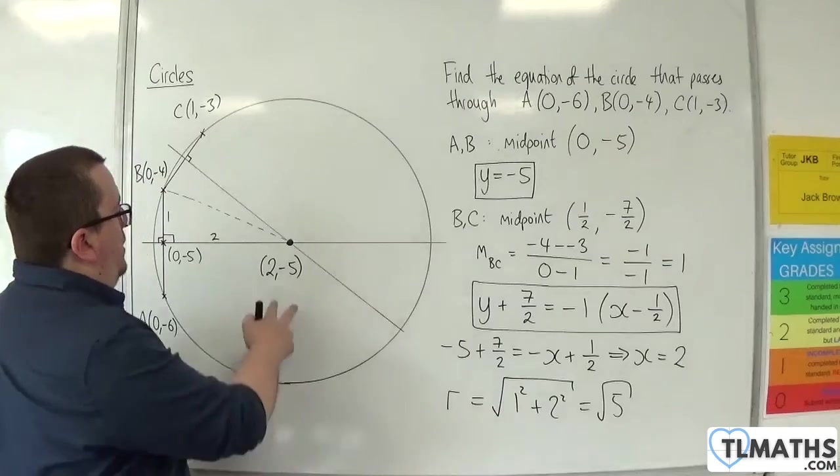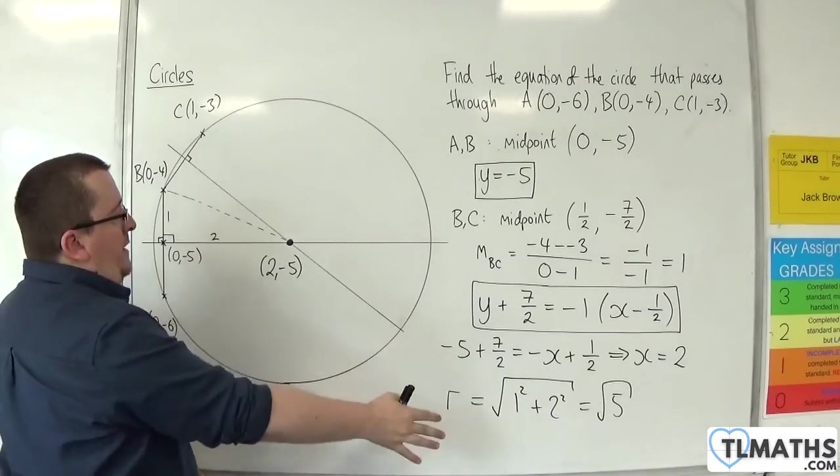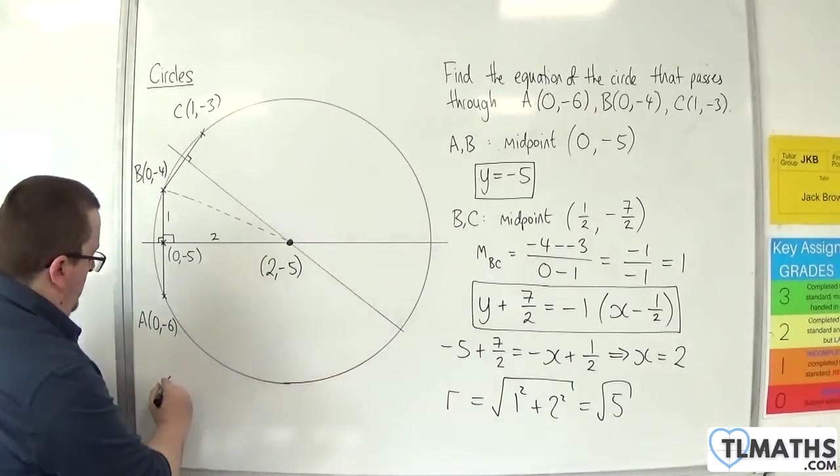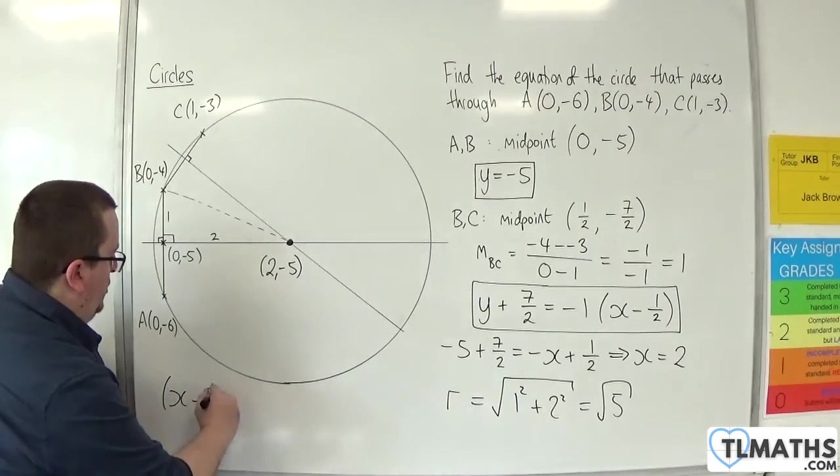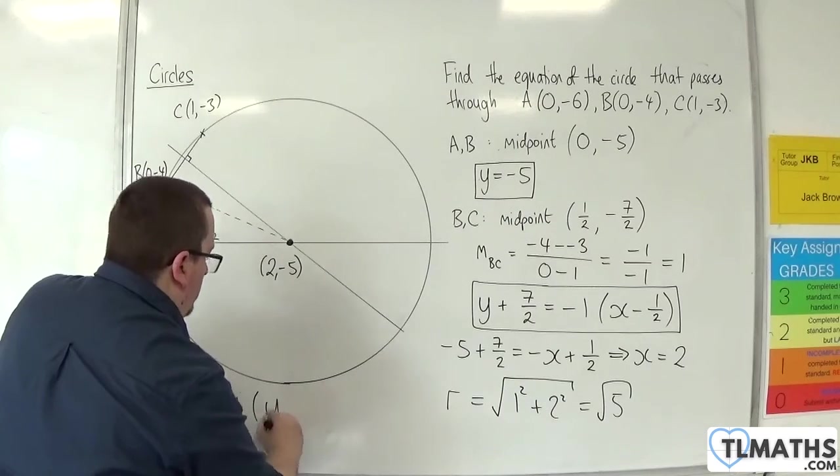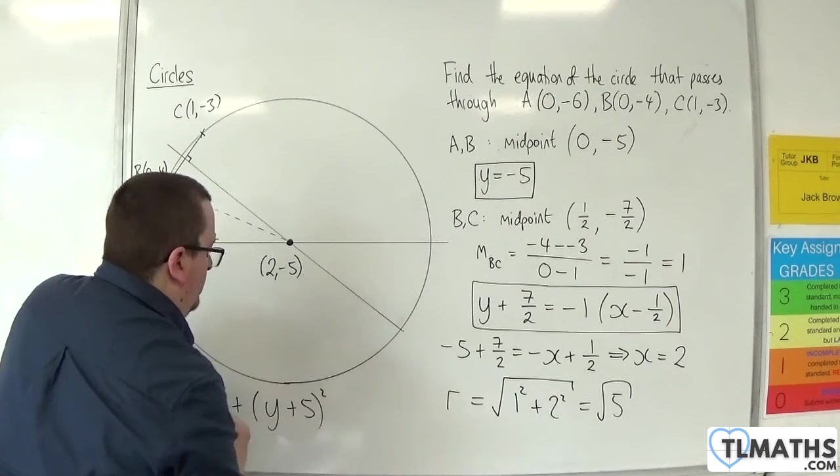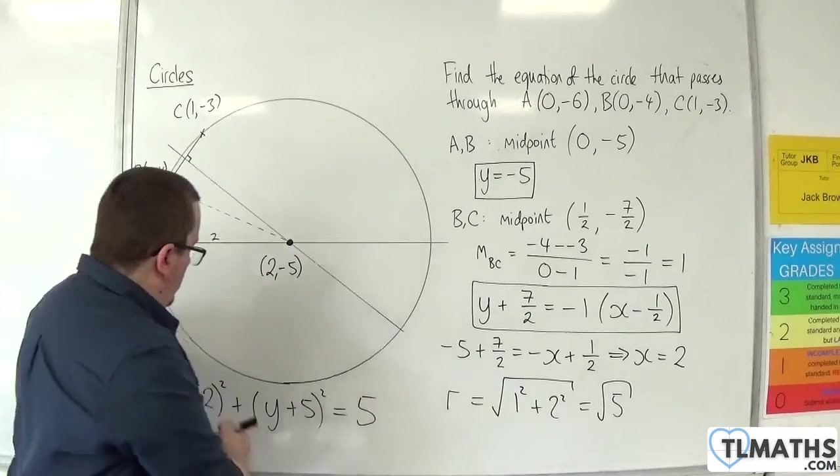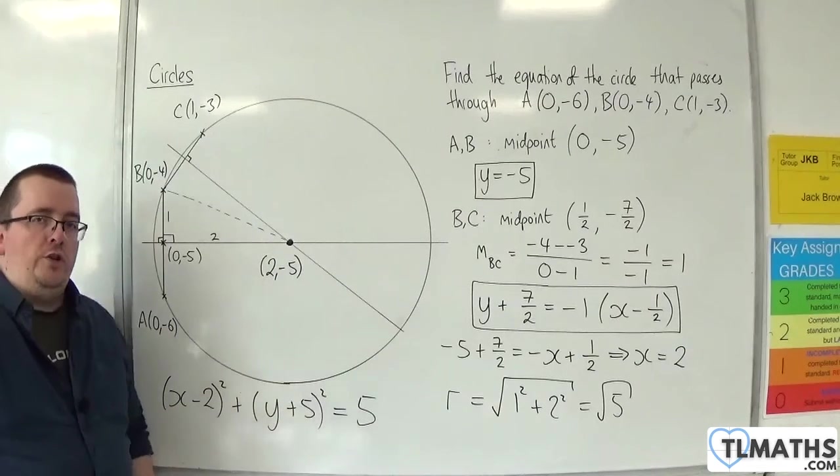So I've now got all the pieces that I need. I know the centre of the circle, (2, -5). I know the radius. So the equation of the circle would have to be (x - 2)² + (y + 5)² = r², which is 5. And so that is the equation of the circle.